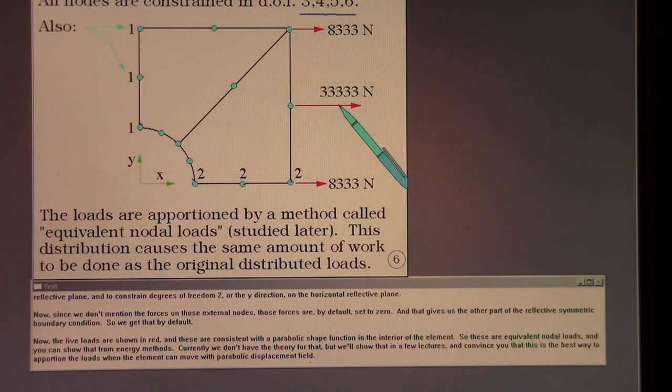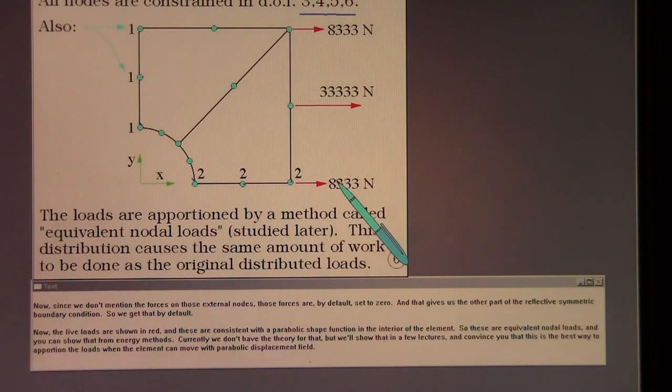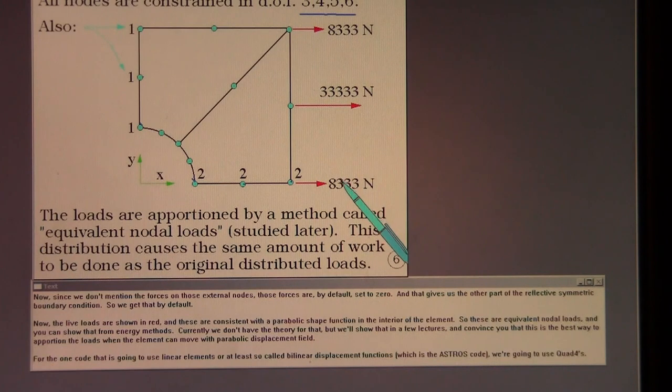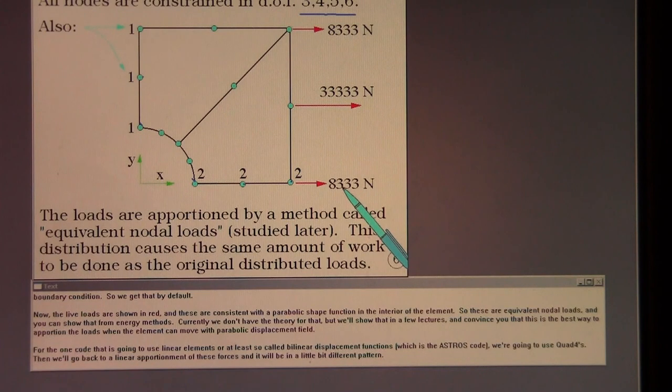Now the live loads are shown in red and these are consistent with a parabolic shape function in the interior of the element. So these are equivalent nodal loads, and you can show that from energy methods. Currently we don't have the theory for that, but we'll show that in a few lectures. And convince you that this is the best way to apportion the loads when the element can move with parabolic displacement field.